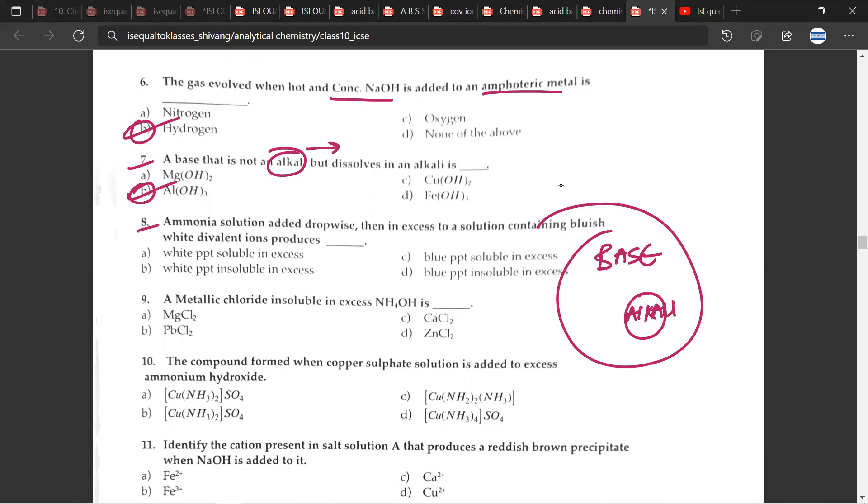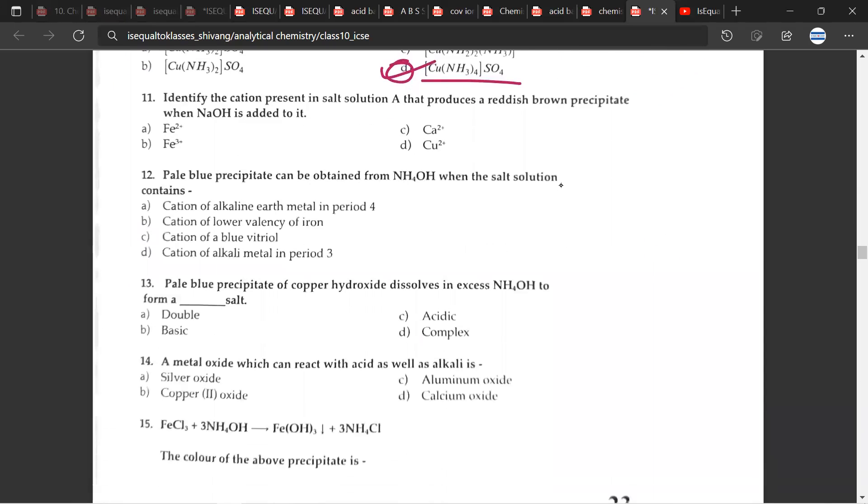Let's move on to the eighth question. Ammonia solution adding dropwise, then in excess to a solution containing bluish white divalent ions produces what? So it produces white precipitate, which is soluble in excess. The ninth question, a metallic chloride insoluble in excess NH4, which is dash. So this would be B, lead chloride. The 10th question, the compound formed in copper sulfate or CuSO4 solution is added to excess ammonium hydroxide. The correct answer for this would be D. This would be the correct answer.